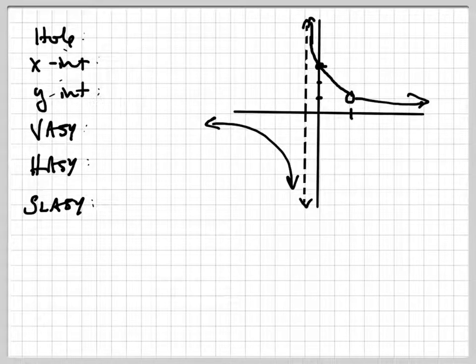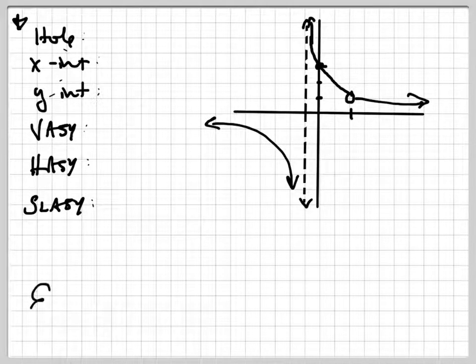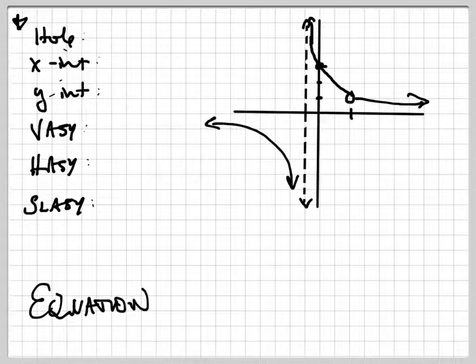Here's a graph, and from the graph we need to fill in all this information over here on the left, and then also we need to write the equation of the rational function. So we're going to go backwards from what we know. Let's go ahead and fill in all the information.